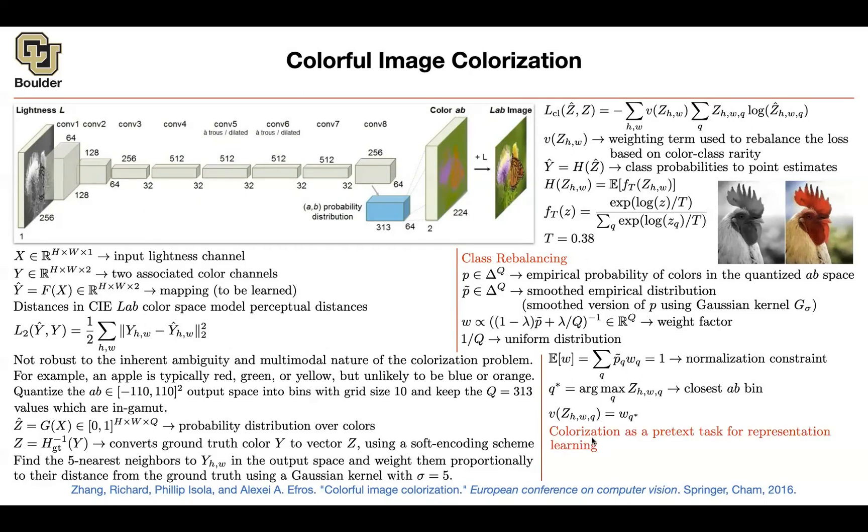The cool thing is you can use colorization. You don't need to have any labeled data. You're just looking at your images, dividing them per two channels or per three channels. Channel lightness is the input. Color channels are the output. No labeled data. No labels in the form of, I don't know, this is a cat. That's a dog. You don't need to have classification labels.